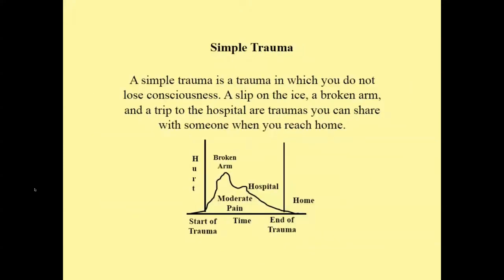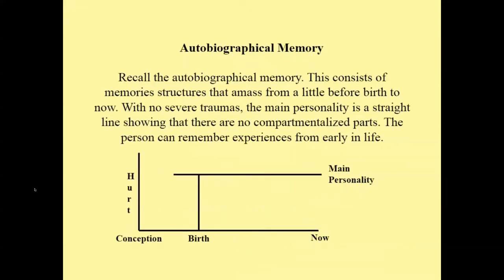Let's start talking about trauma. A simple trauma is a trauma in which you do not lose consciousness — a slip on the ice, a broken arm, a trip to the hospital are traumas you can share with someone when you reach home. Simple traumas involve moderate pain and you know how to deal with the trauma event. Recall the autobiographical memory — this consists of memory structures that amassed from a little before birth to now. The main personality is created from memories in the autobiographical memory. With no severe traumas, the main personality is a straight line showing there are no compartmentalized parts. The person can remember experiences from early in life and can recall dissociative memories with the right stimuli or simple therapy interventions.